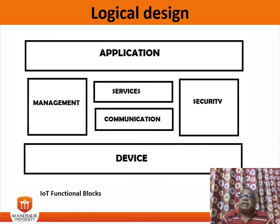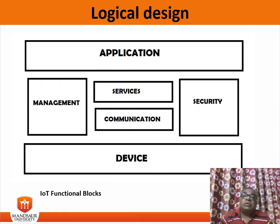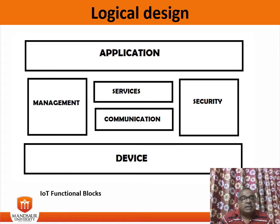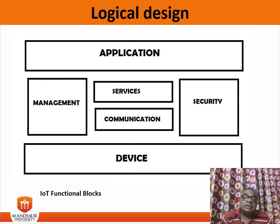The management block provides various functions to govern the IoT system. The security block secures the IoT system, providing functions such as authentication, authorization, message and content integrity, and data security. The application block is an interface that the user can use to control and monitor various aspects of the IoT system. Applications also allow users to view the system status and analyze process data.